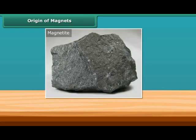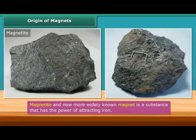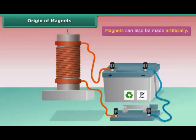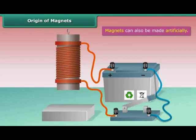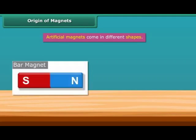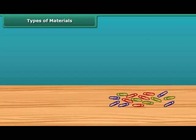This type of rock was subsequently named magnetite, after Magnus himself. Magnetite is a natural magnet and contains iron. In later days this was more widely known as a magnet. A magnet is a substance that has the power of attracting iron. Magnets can also be made artificially. Artificial magnets come in different shapes, for example bar magnets or shoe magnets.